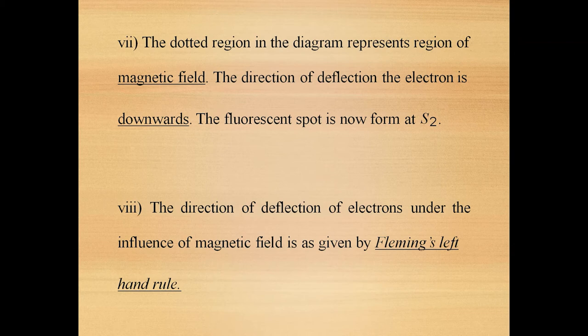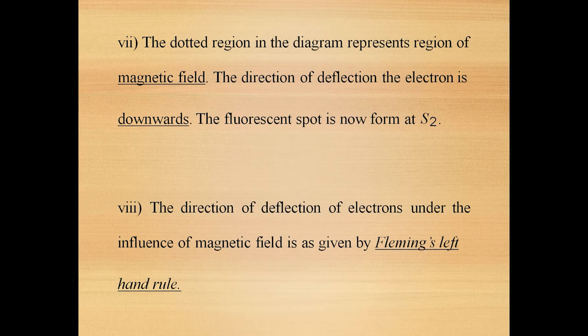To summarize: in the absence of electric and magnetic field, the spot is formed at S with no deflection. In the presence of electric field, the electron beam is deflected upwards and the spot is formed at S1. When the magnetic field alone is applied, because of the magnetic force, the electron is deflected downwards and the spot is formed at S2. These are the three different cases when subjecting the beam of electrons to electric and magnetic fields.